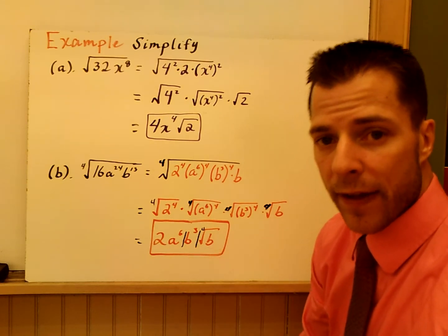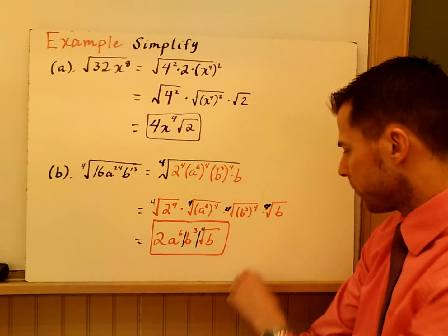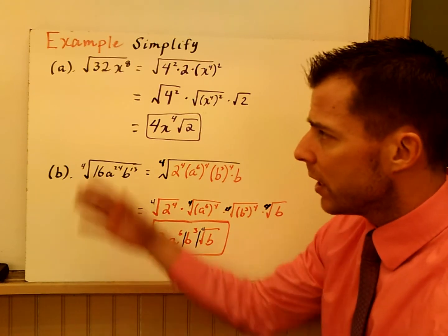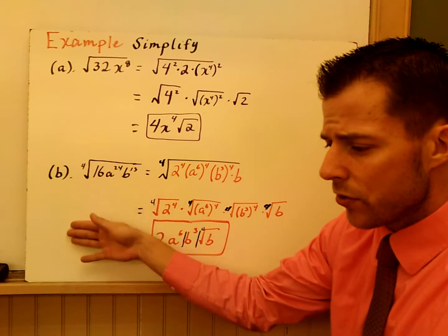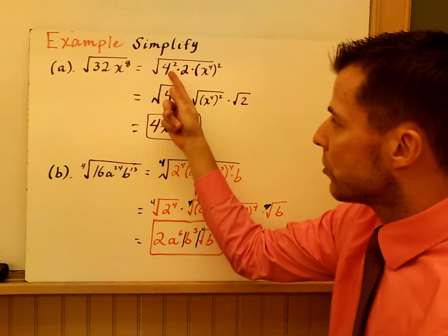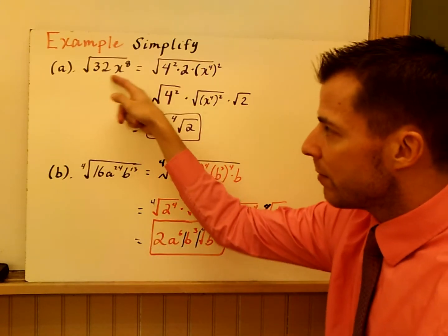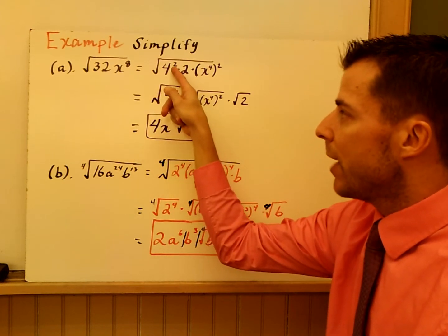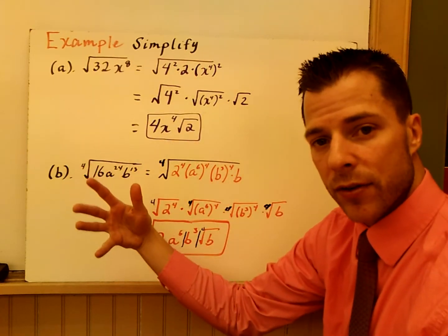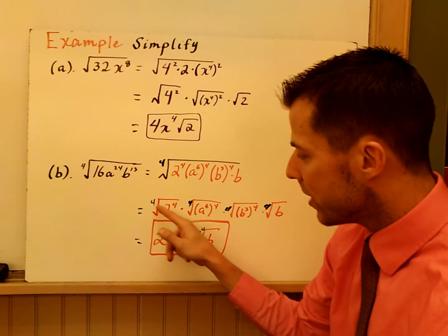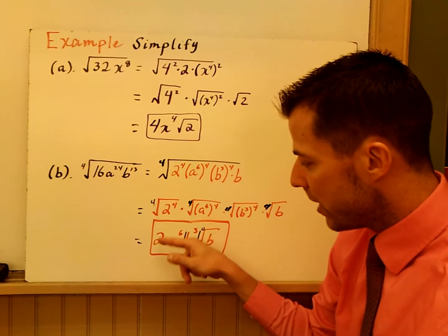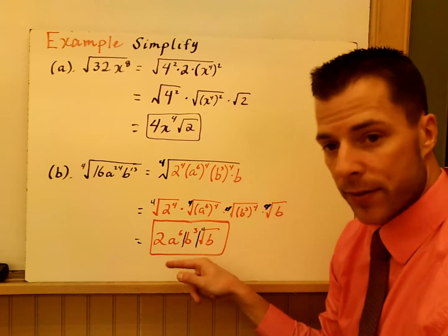That ensures you have a positive number. So that's the answer to the second part. These first two examples cover both parts of the essential knowledge: breaking up my radical and trying to make any number underneath match a power of the index. Whatever the index is, that's what I'm trying to do. When powers match the index, those bases come out.